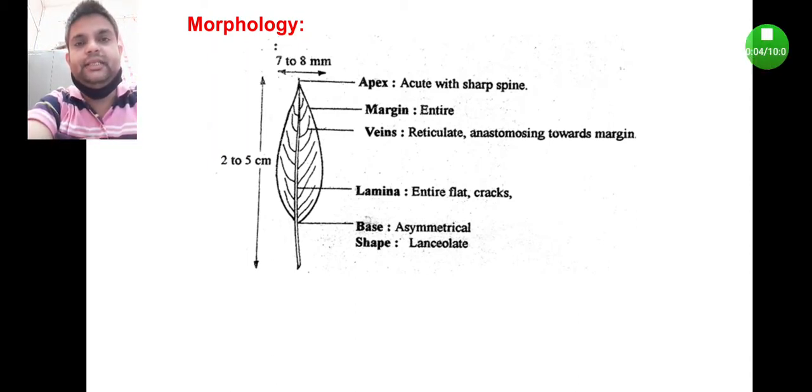Coming to the results and discussion part, first let us concentrate on the morphology of the Senna leaf. Senna leaf is very small in size, two to five centimeters in length and seven to eight millimeters in diameter.